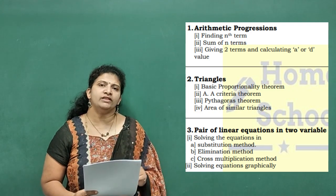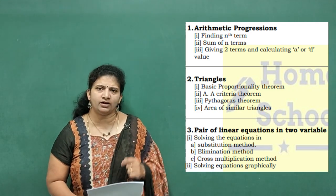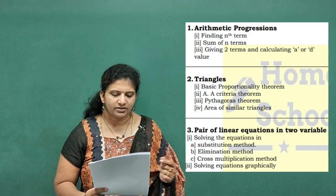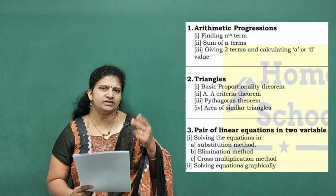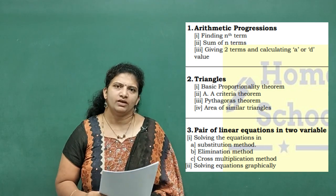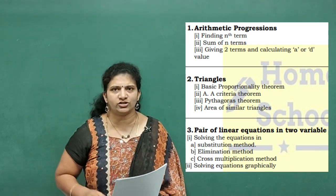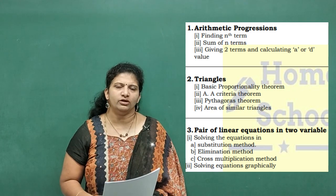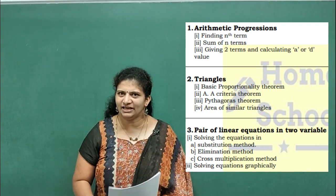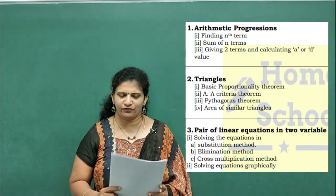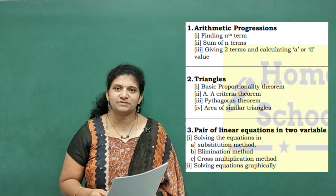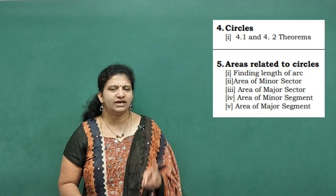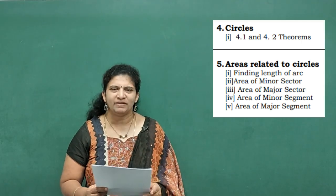Among the first three methods you will get one problem. If they say 'solve by any method of your choice,' you can choose; if they specify a method, use that one. In this chapter, four marks compulsory — one graph will be given; that is fixed. So in this chapter we can expect two plus four, six marks total. Coming to the next chapter — Circles — two theorems, and among those one theorem is sure for three marks.